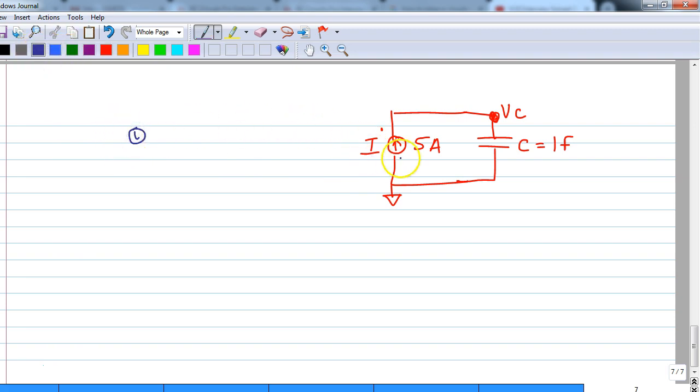First point is we must know the proper definition and meaning of this current source. A current source is one which gives constant current irrespective of the voltage across it. What does that mean? The voltage across it, between these two points, can be anything. The voltage across these two points is nothing but voltage across the capacitor.